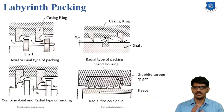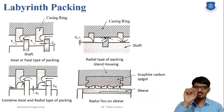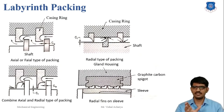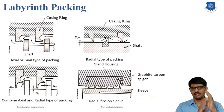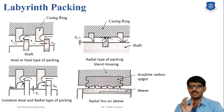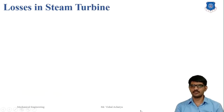The third type is the combined radial and axial packing, as shown in the figure, where both the axial clearance and radial clearance are controlled. These packings are also provided at the high pressure end. The fourth type is the radial fins on the sleeve, where the packing consists of a ring of graphite carbon spigoted into the gland housing and a sleeve on the spindle. The radial fins on the sleeve are initially in contact with the carbon.